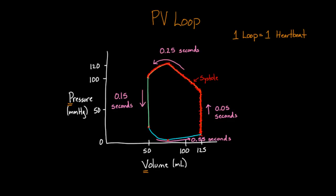That leaves the other half of our loop — although in terms of time, much more than half, because some of these segments take longer. I'm going to do all this in blue. All the blue represents diastole, the other half of the heart cycle. This is when the left ventricle is now relaxing. So this is systole and diastole, side by side on this graph, representing one loop or one heartbeat.